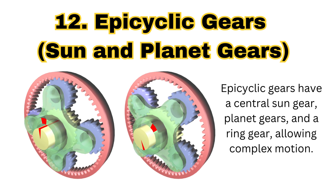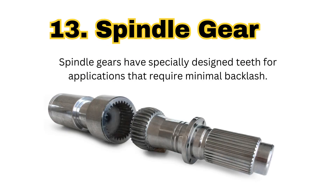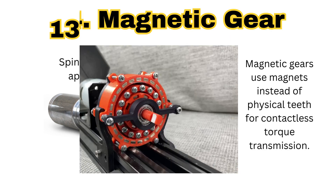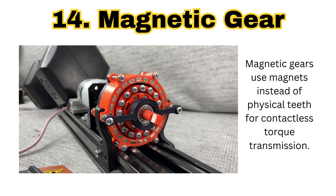The next type of gear is the spindle gear. Spindle gears have specially designed teeth for applications that require minimum backlash. They are used in high precision equipment like optical instruments and telescopes.